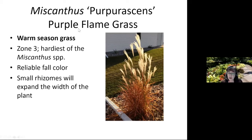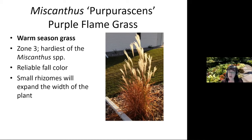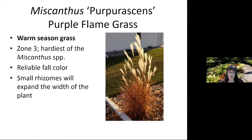Purple flame grass is a warm-season grass with wonderful seed heads produced in late August into September. It's a zone three plant and hardier than other Miscanthus species grown in North Dakota. Of all the miscanthus species, this is the one I recommend. It takes mild drought quite well but may need some irrigation under more severe drought. It's a reliable grass with reliable fall color. It does have small rhizomes, but it's not invasive — the rhizomes will expand the plant's width over time but won't take over your garden.